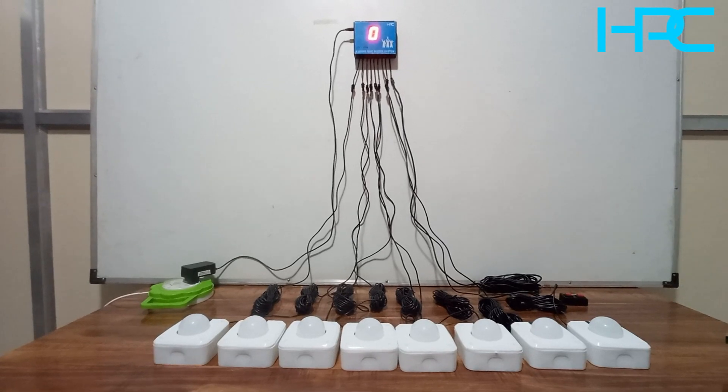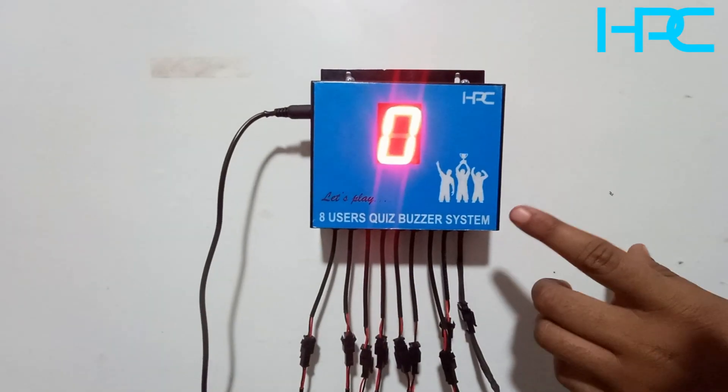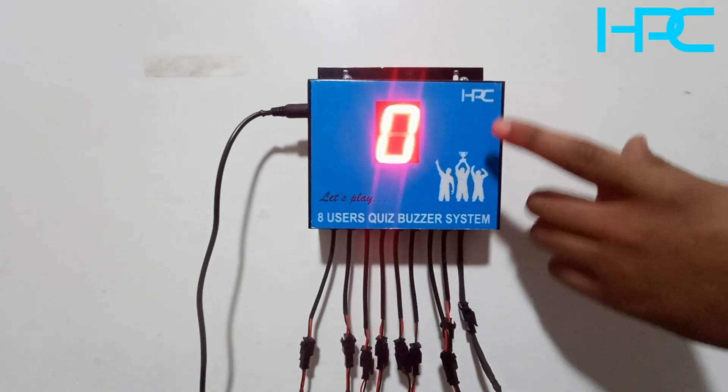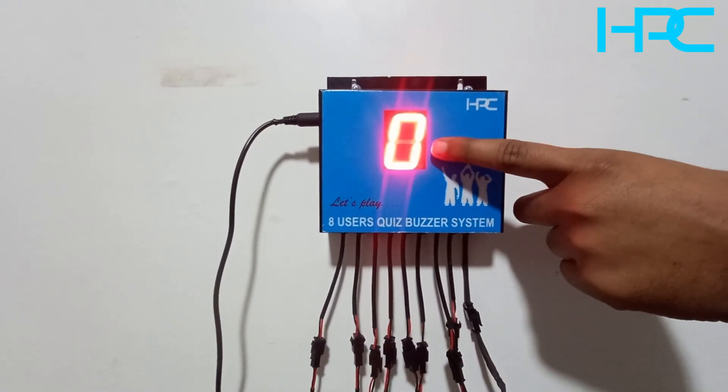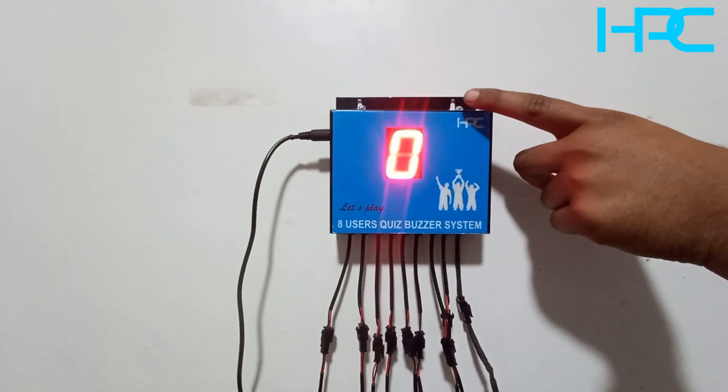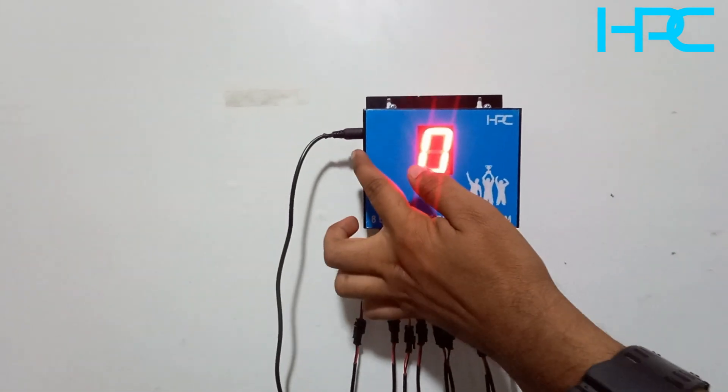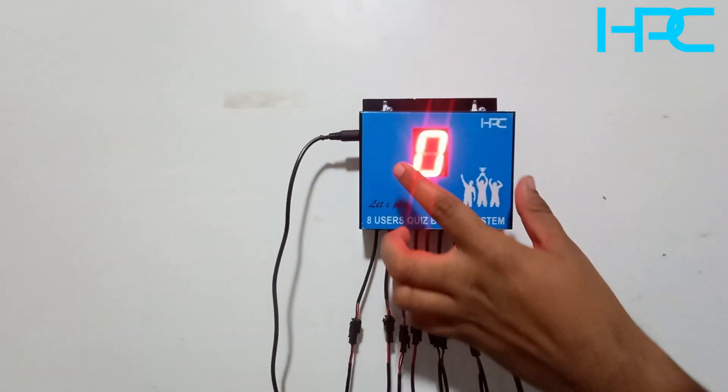Hello everyone, this is our HPC 8 user quiz buzzer system. In this system you will get this display unit. It has this 1.5 inch display with a wall mount option here, so that you can mount this system on the wall also. Here's the power socket you can connect so that the system will turn on.